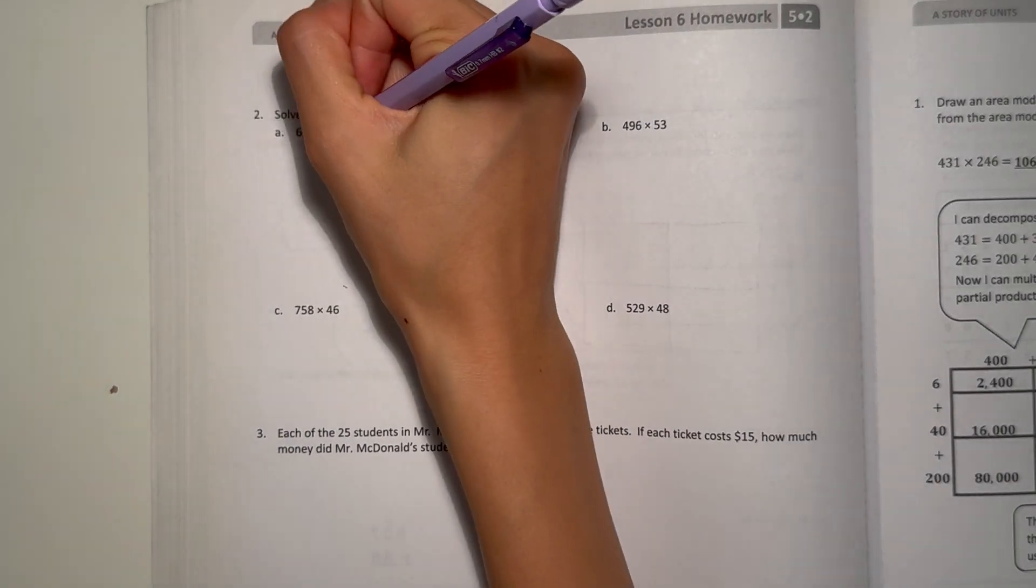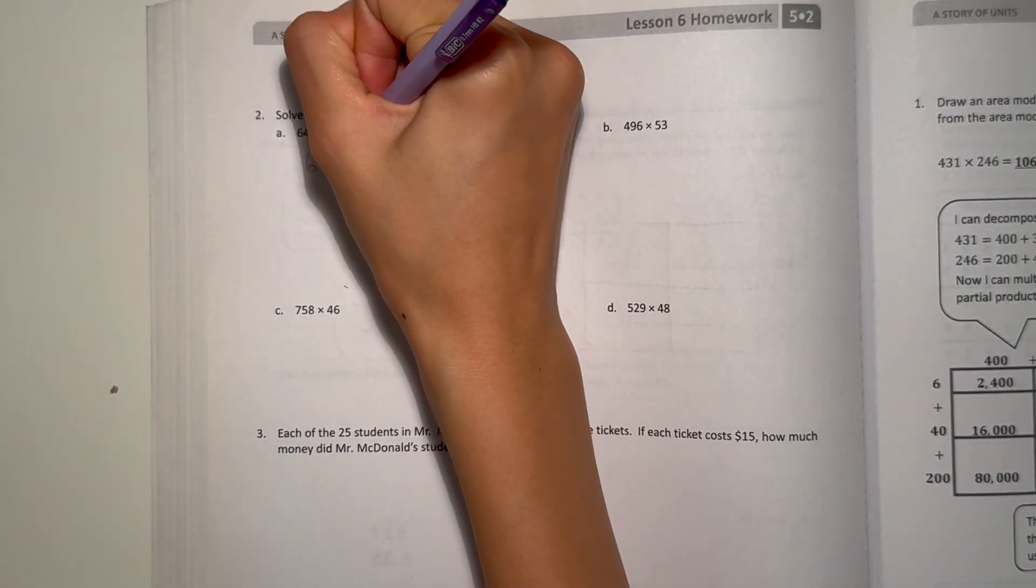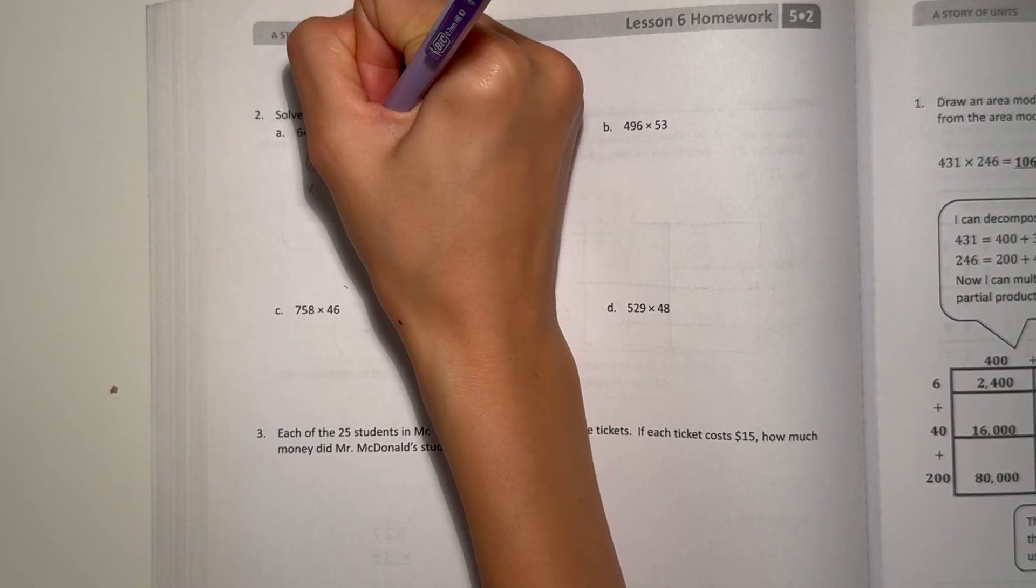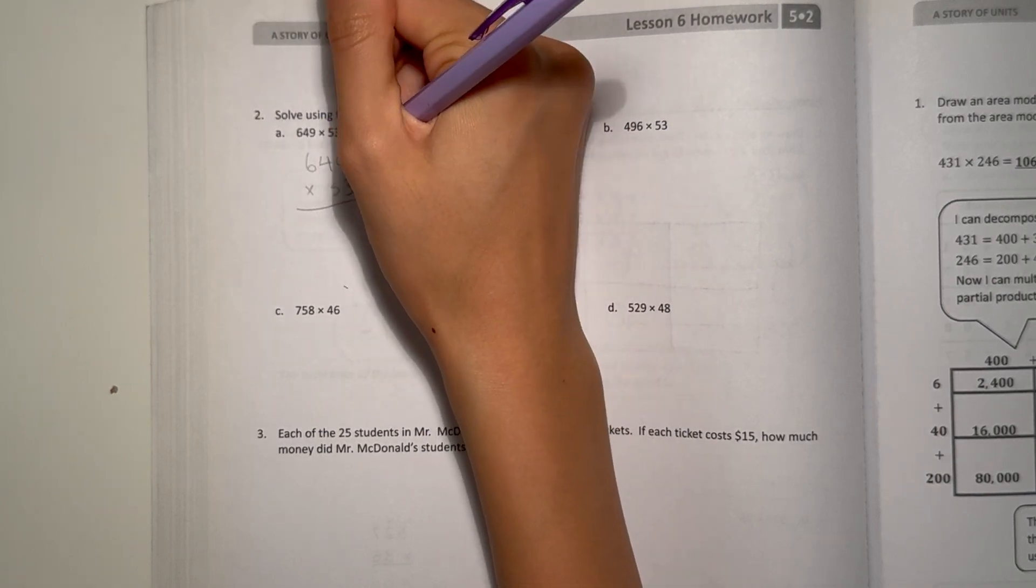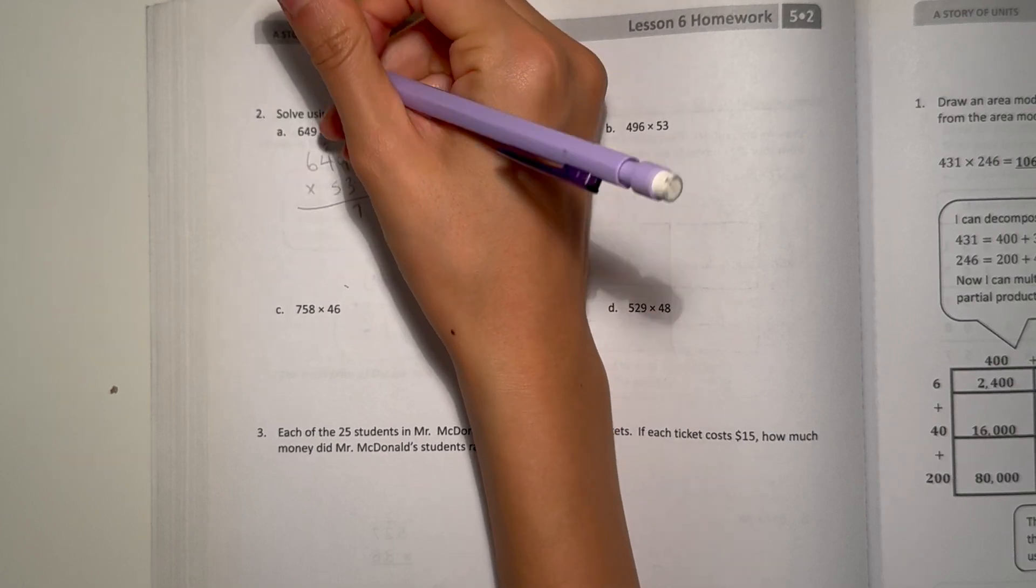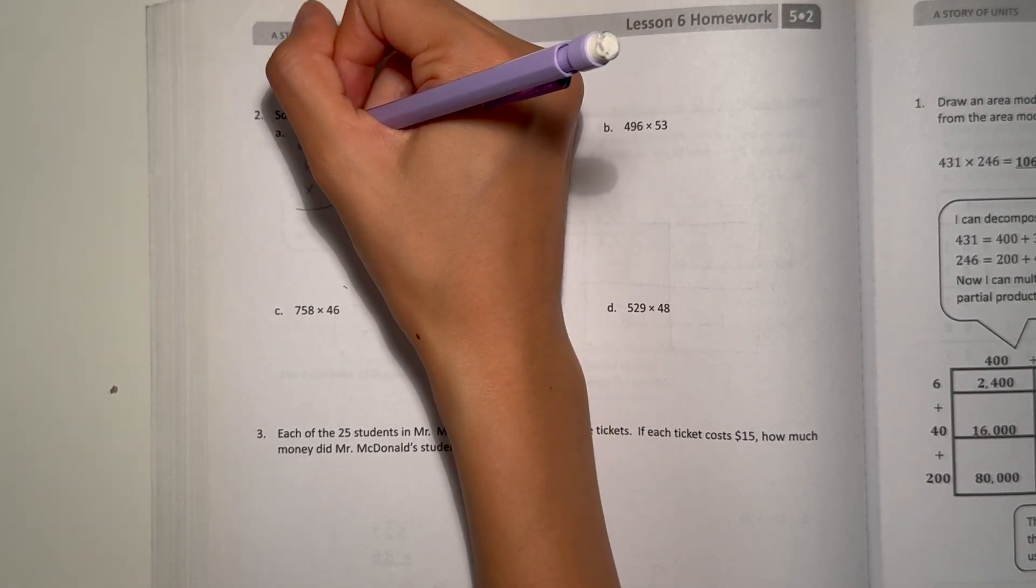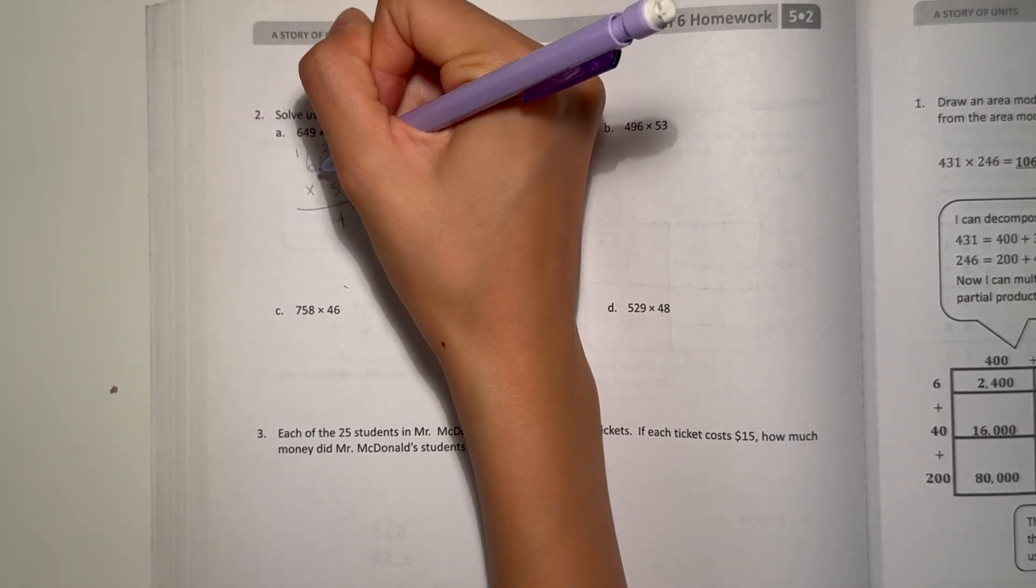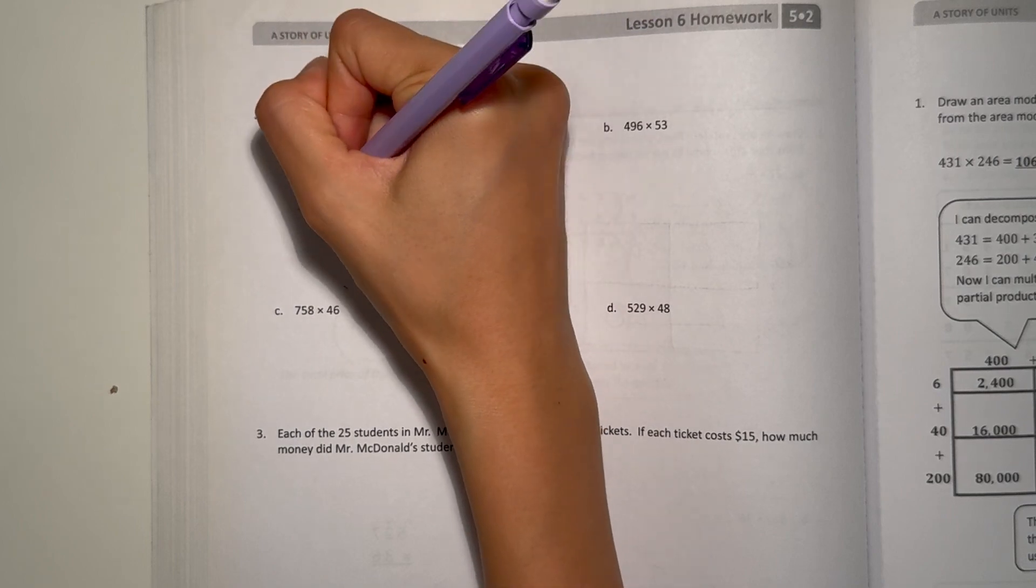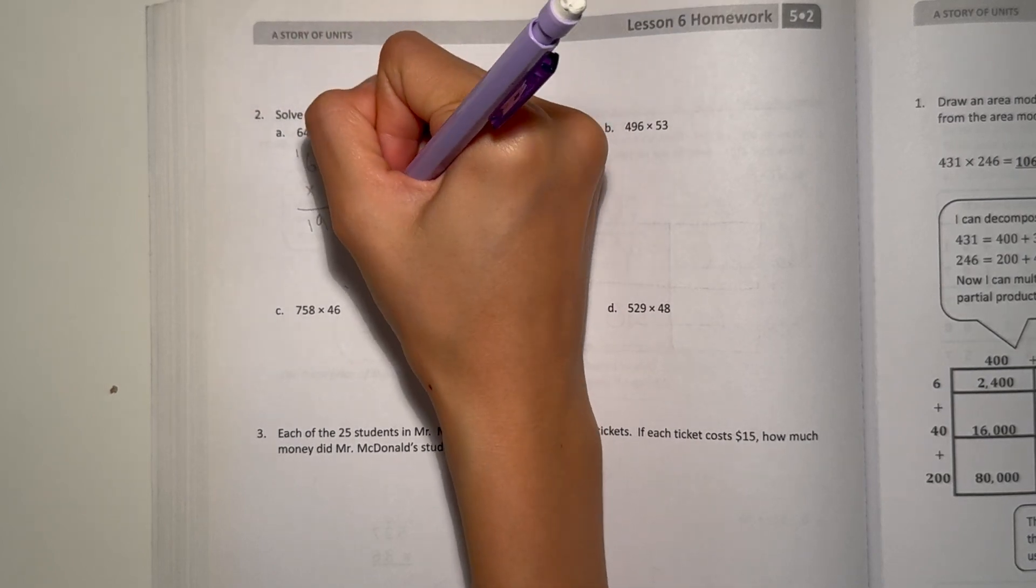A. We have 649 times 53. 9 times 3 is 27. 4 times 3 is 12. Plus 2 is 14. And 6 times 3 is 18. Plus 1 is 19.